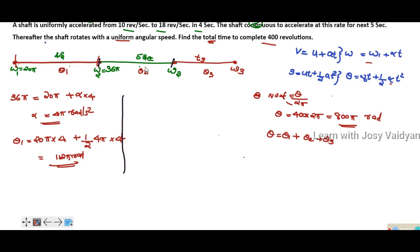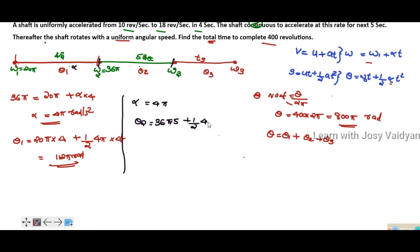For Stage 2, we find alpha. The angular acceleration alpha equals (omega 2 minus omega 1) divided by time, giving alpha equal to 4π radians per second squared. For theta 2, using the kinematic equation with initial velocity 36π, time 5 seconds, and half into alpha 4π into 5 squared, we calculate the angular displacement for Stage 2.